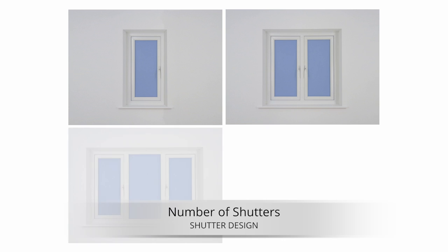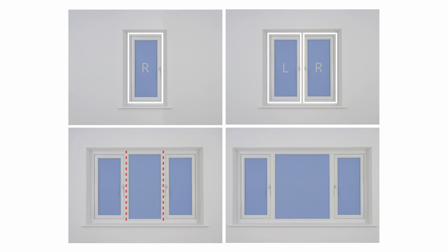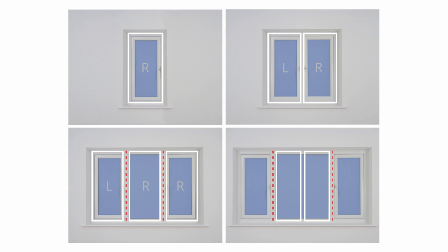Depending on the window width, you can choose how many shutters you have across your window, and how you open them. When choosing, it's important to match the number of shutters to the window sections. A single window would have one shutter that could be hinged left or right. A double window would have two shutters, opening left and right. A triple window would have two T-posts, with a single shutter between each post. The outer shutters would open left and right, and the centre shutter could open left or right. If your window has a wider pane of glass in the centre, you would have two T-posts again, this time with two centre shutters opening left and right, and the two outside shutters opening left and right.